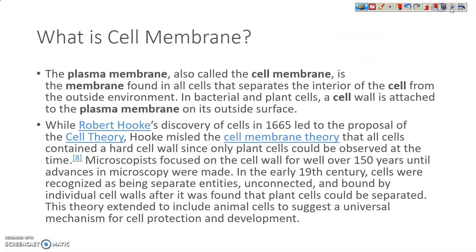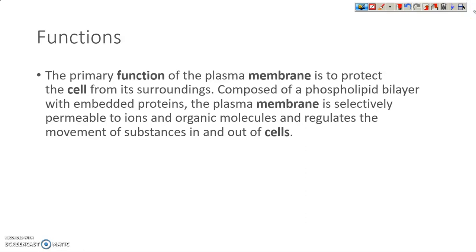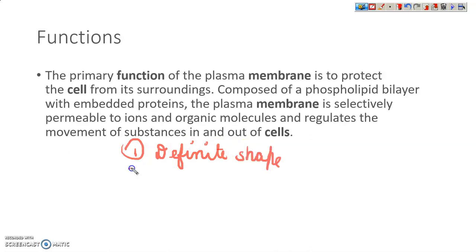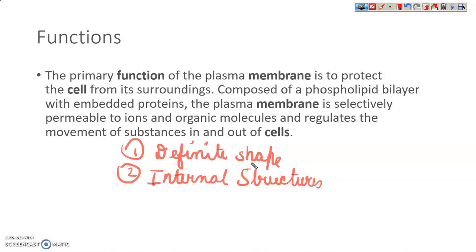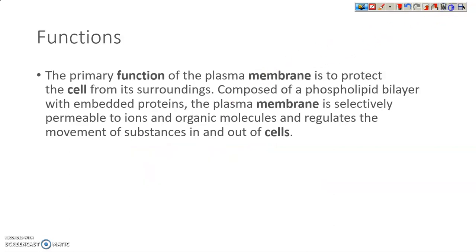Now we will discuss the functions of the cell membrane. The first function is it gives the cell a definite shape. Since it is the outermost layer, it protects the internal structures. It is selectively permeable, so it allows only some substances to go in and out of the cell. In animal cells, it is involved in the formation of vesicles. These were some functions of the cell membrane.